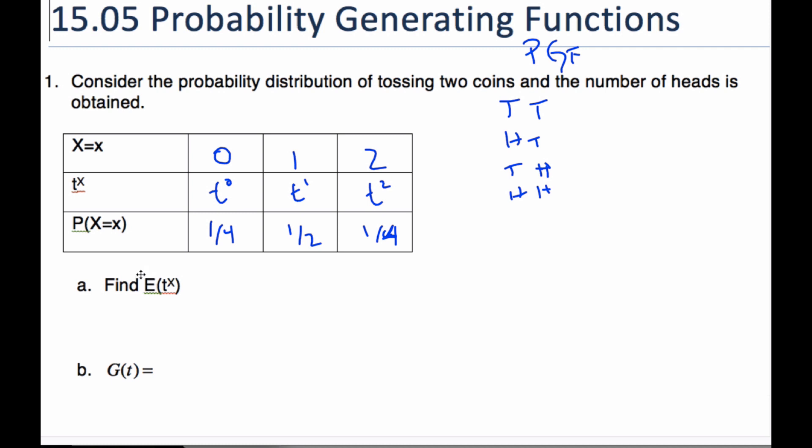And I want to find this thing called the expectation of t to the x. Well, expectation means I take this value and I multiply it by the probability, so the probability one quarter times t to the zero plus one half times t to the one plus one quarter times t squared. And we know that is one, so I can just write it as such.